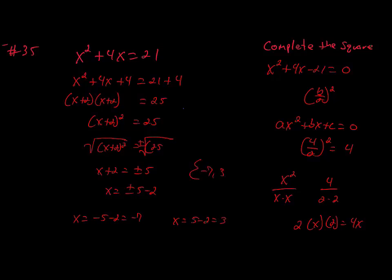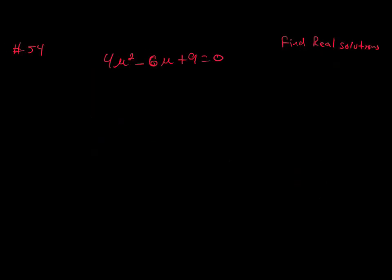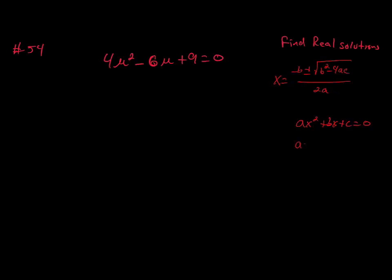The last one is number 54, where we'll find the real solutions using the quadratic formula. The quadratic formula is x equals negative b plus or minus the square root of b squared minus 4ac, all over 2a. Remember, the standard quadratic equation is ax squared plus bx plus c equals 0. In this problem, a equals 4, b equals negative 6, and c equals 9. We plug these values into the formula.